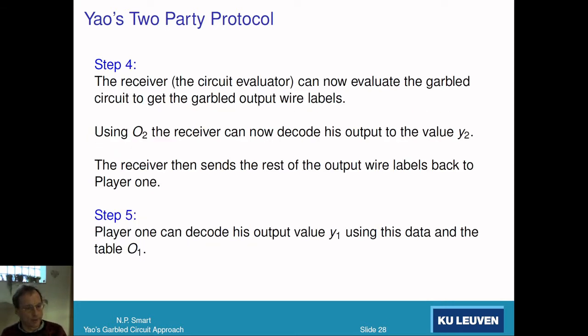The circuit evaluator has got the garbled circuit, the input wire labels corresponding to player 1's input, and his own input. So he can evaluate the circuit and get the output wire labels. He can decode his own output Y2 because he's got the output wire table O2. For output Y1, he just sends those wire labels back to player 1 in step 5, who can now decode. That's it.